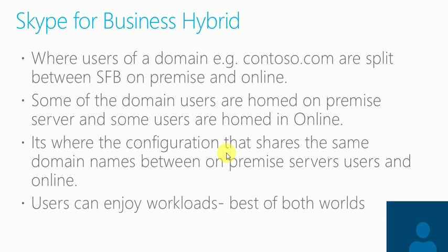The domain is being split between the on-premise world and the online world. Suppose contoso.com is your domain — it can be split between on-premise and online. Non-critical users are homed in the online world, enjoying online feature sets, while critical users who cannot be deployed online remain in the on-premise infrastructure. When you have this topology, that's when you come together and do a hybrid deployment.